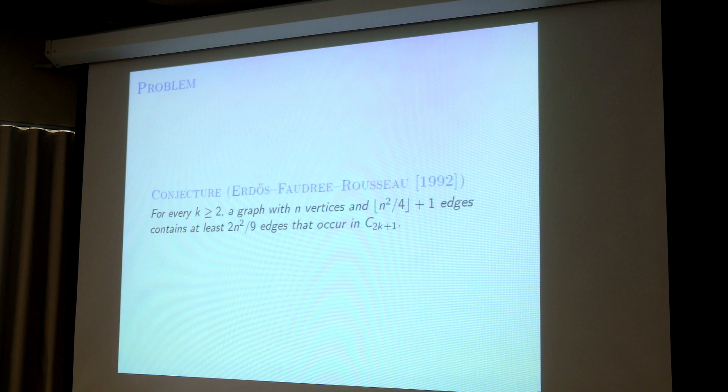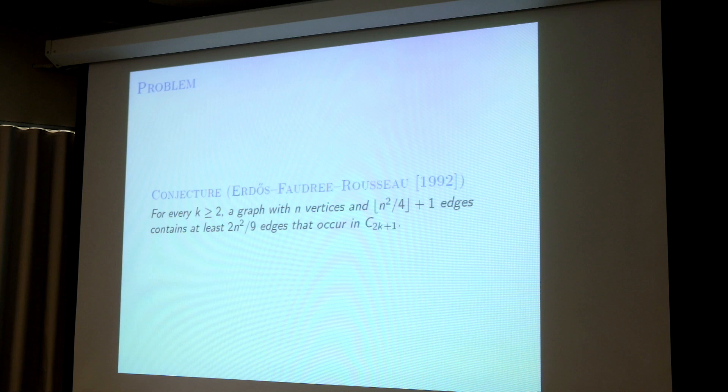The conjecture says: for every k ≥ 2 — since we have already studied triangles, we start from C5 — for every k ≥ 2, a graph with n vertices and n²/4 + 1 edges contains at least 2n²/9 edges that occur in C_{2k+1}. So if you fix the length of the odd cycle, say C5, you have this number of edges that occur in C5. The same is true for C7 and C9.